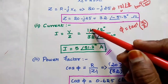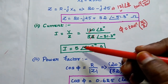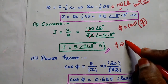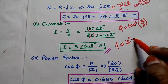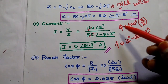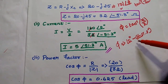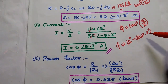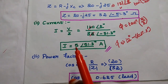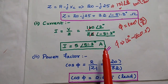For the magnitude, we divide directly: 160 divided by 32 equals 5. For the phase, we subtract: numerator phase minus denominator phase, that is 0 degrees minus of minus 51.3 degrees. Minus times minus gives plus, so the current is 5 at plus 51.3 degrees, in amperes.